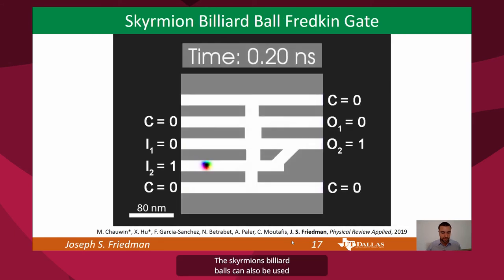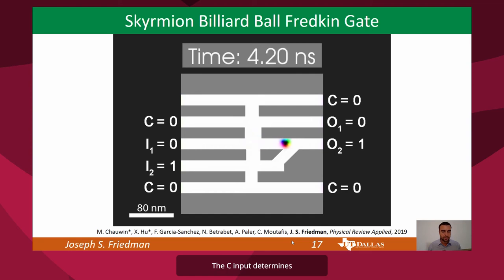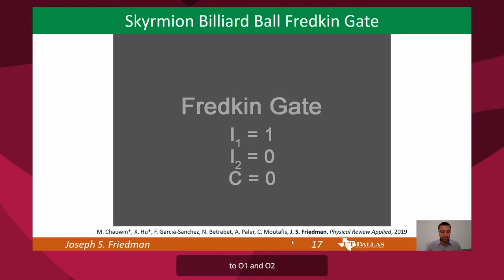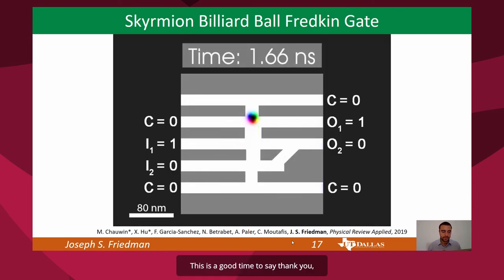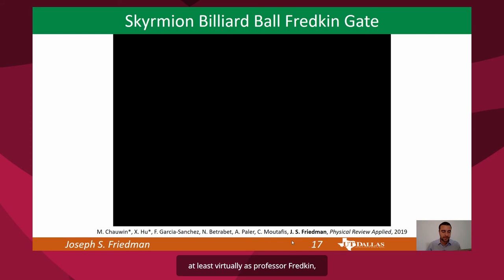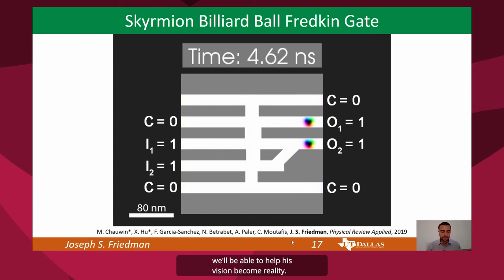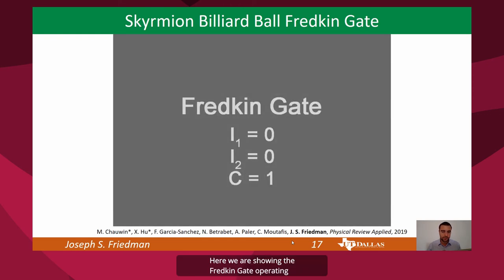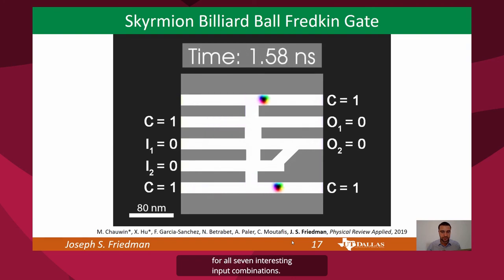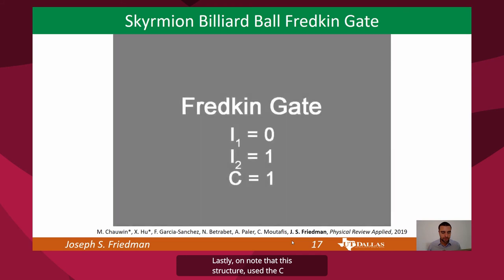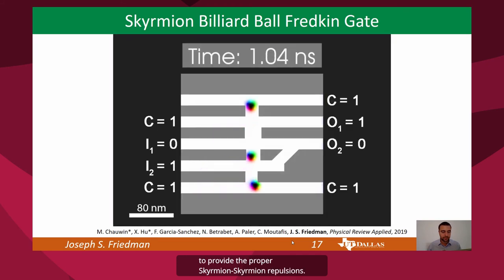The skyrmion billiard balls can also be used to perform the Fredkin gate operation using a slightly more complex structure. In this gate, the C input determines whether the I1 and I2 inputs will propagate to O1 and O2, or if they will be swapped. This is a good time to thank the organizers for inviting me — I am very honored to be presenting virtually alongside Professor Fredkin, and I am very appreciative of all his contributions to the field. The Fredkin gate is shown operating for all 7 interesting input combinations, and I will note that this structure uses the C input twice in order to provide the proper skyrmion-skyrmion repulsions.